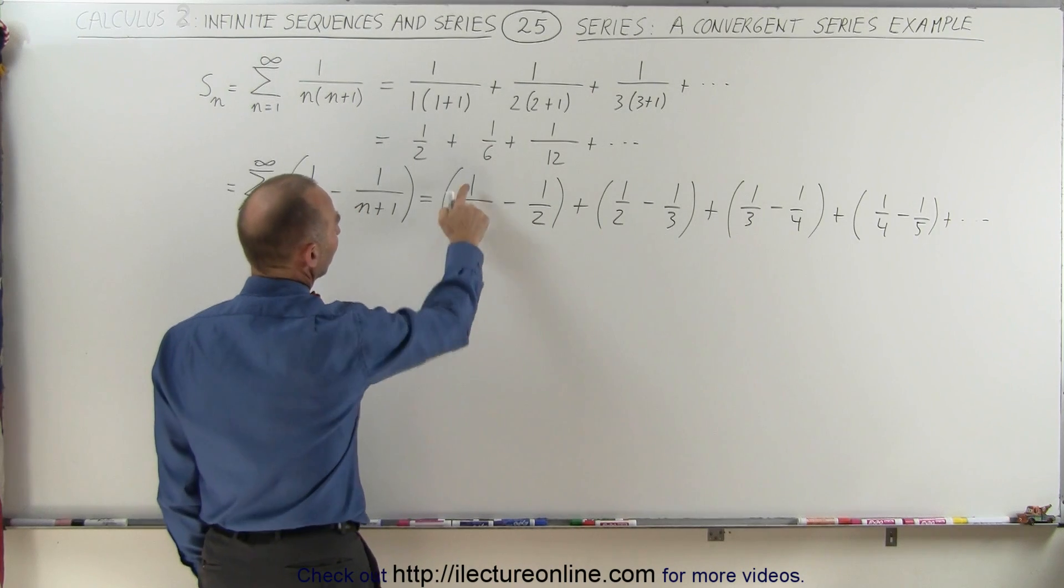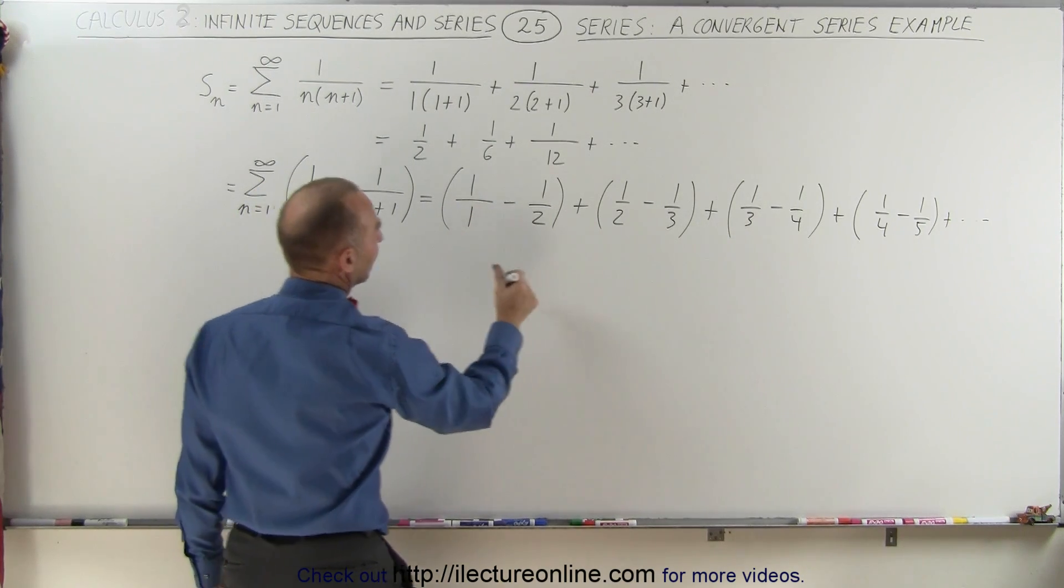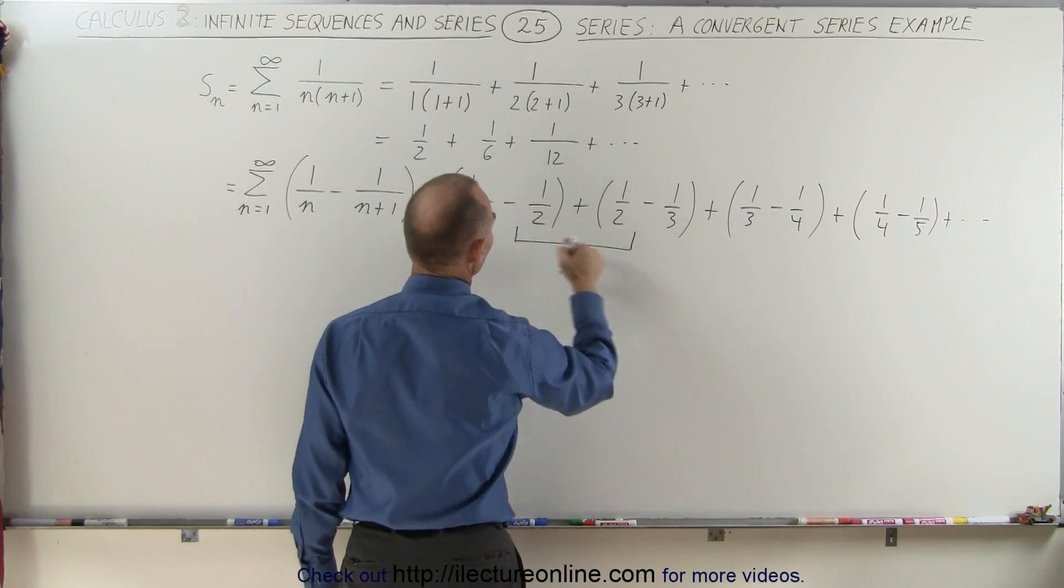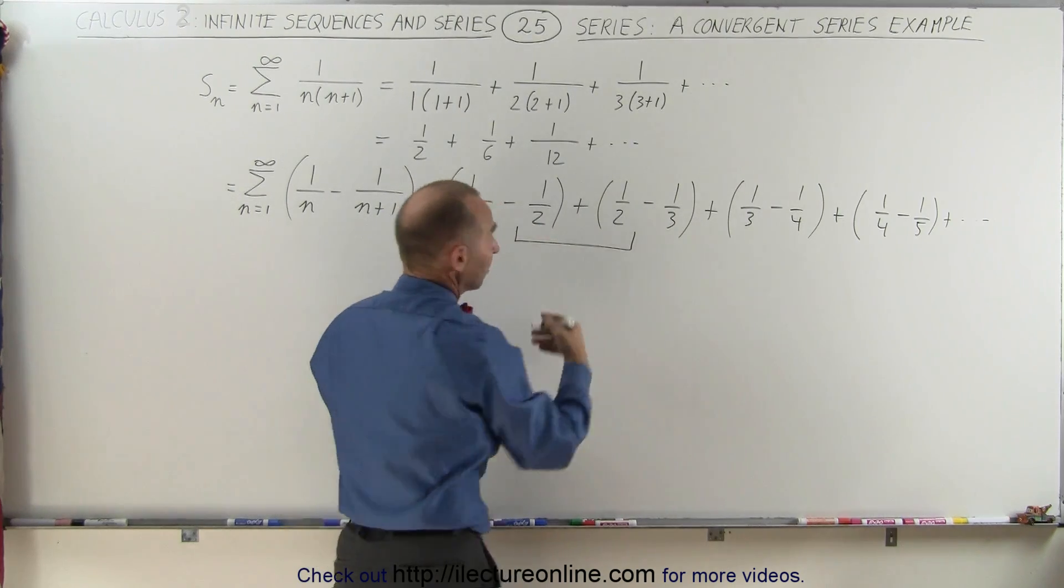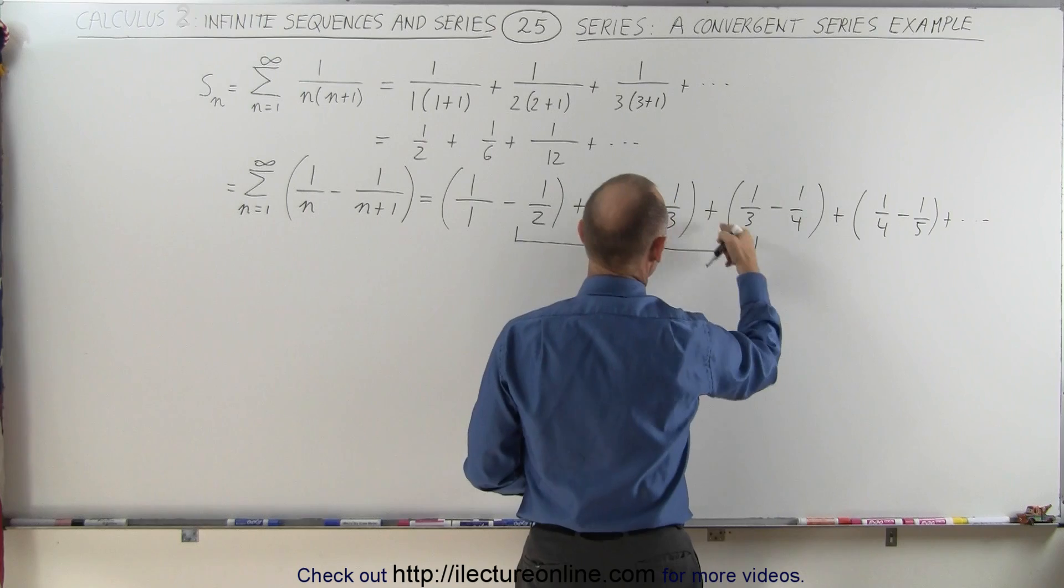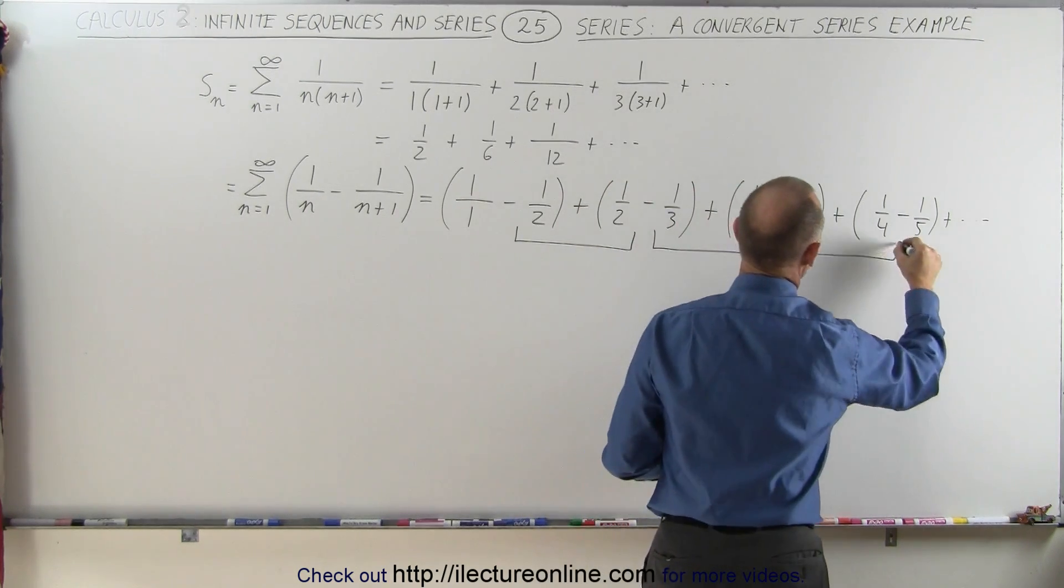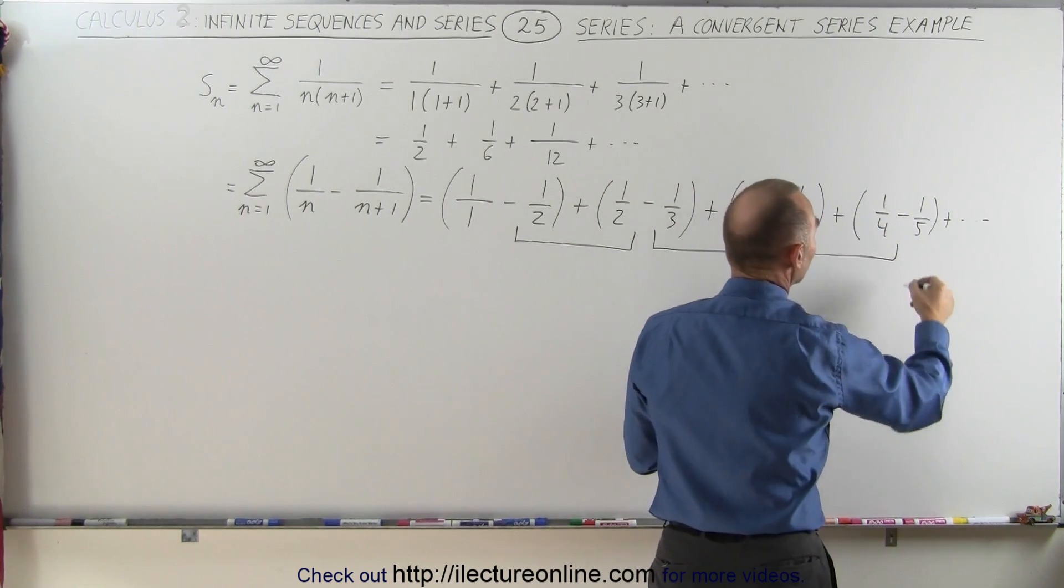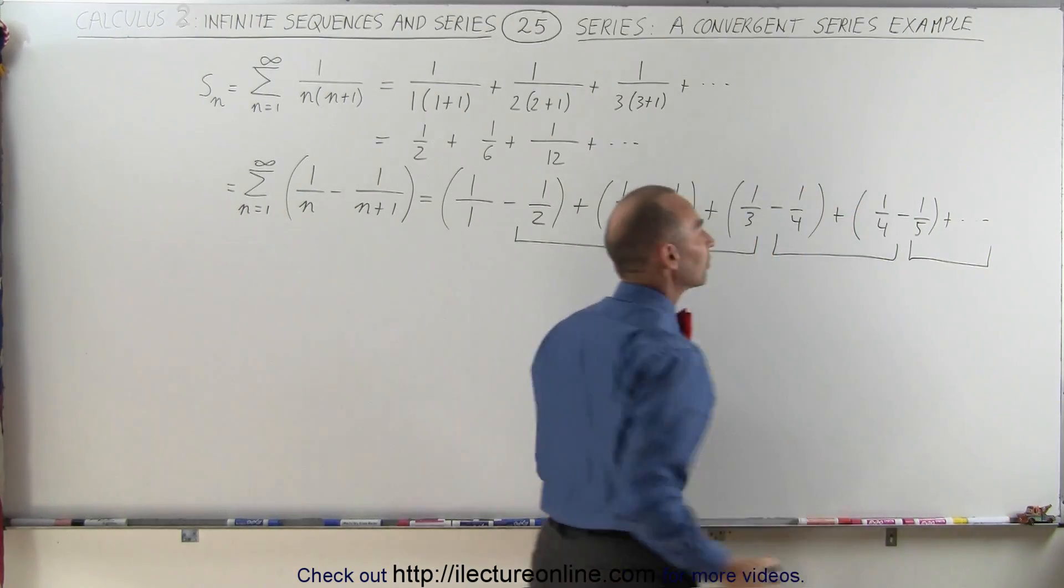Now when you look carefully, we have 1 over 1, which is 1. And then if you combine these two together, we have a plus half and a minus half, that's equal to 0. And here we have a minus 1 third and a plus 1 third, that's equal to 0. And a minus 1 fourth and a plus 1 fourth, that's equal to 0. And you can see how that pattern continues.